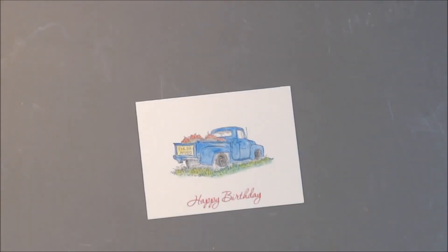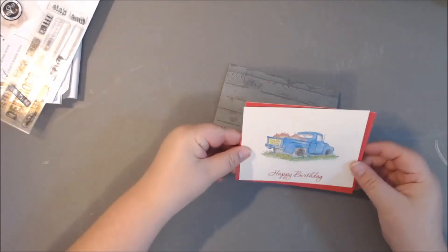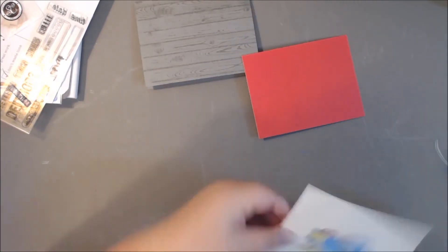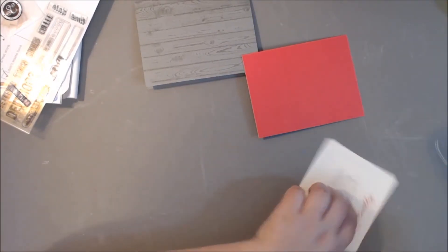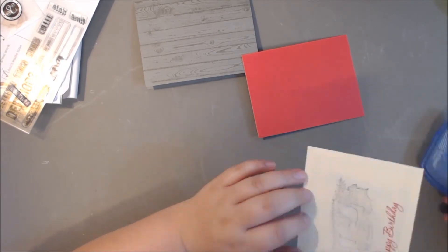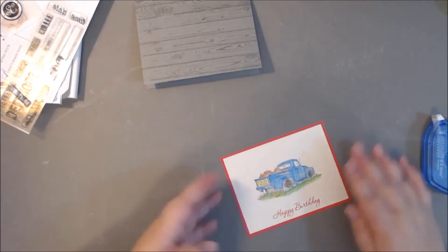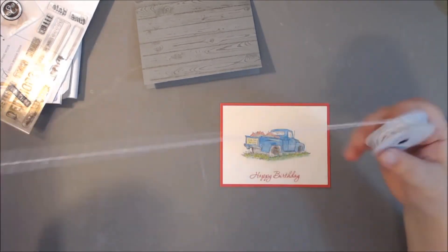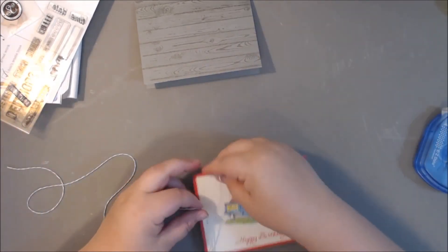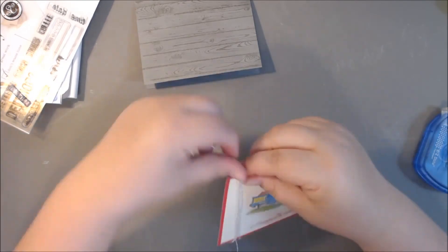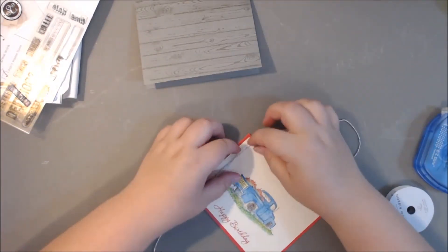I'm just going to let this dry, it dries pretty quickly, and I'm just seeing how I want the layers all put together. I just put regular adhesive on this piece, this layer, and I matted it onto that red piece.